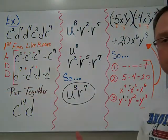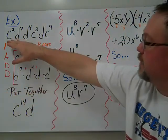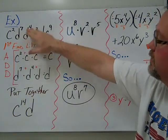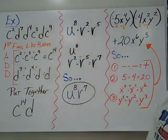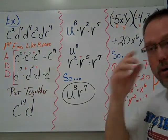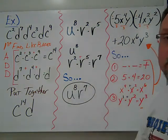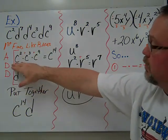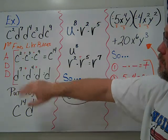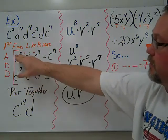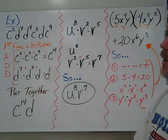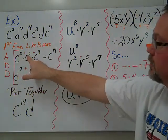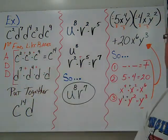Now some broader examples. We have c² · d⁷ · d⁴ · c³ · d · c⁹. Break this down by finding your like bases. For all the c's, we have powers of 2, 3, and 9 — since we multiply like bases we add the powers: 2 + 3 + 9 gives us c to the 14th.